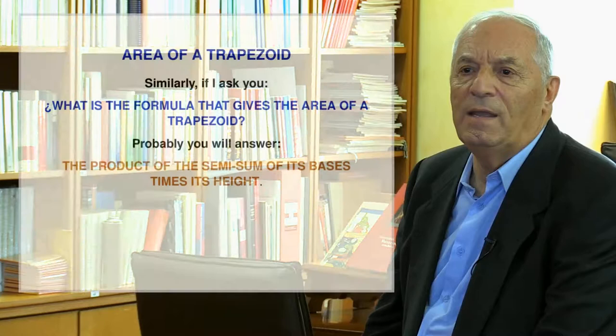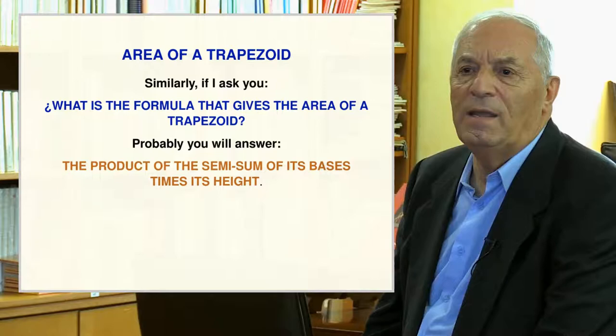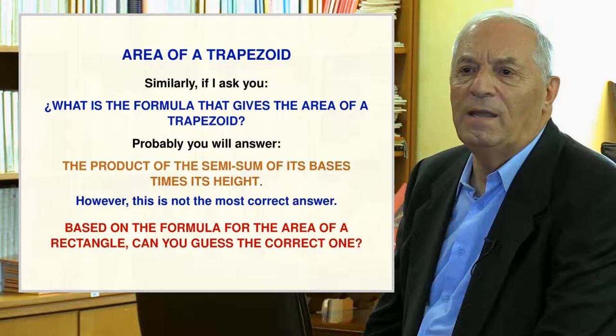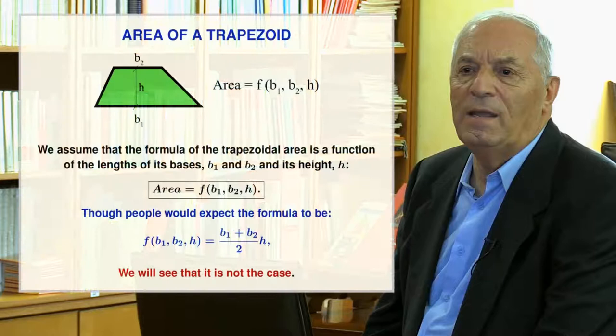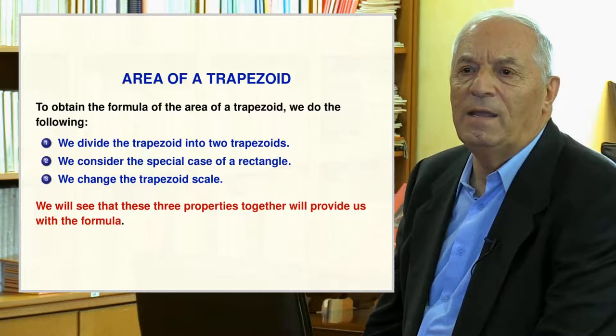Based on the formula for the area of a rectangle, can you guess the correct answer? We assume that the formula of the trapezoidal area is a function of the lengths of its bases v1 and v2, and its height h as indicated in the box formula. Though people expect the formula to be the product of the semi-sum of its bases times its height, we will see that this is not the case. To obtain the formula, we will do the following: first, divide the trapezoid into two trapezoids; second, consider the special case of a rectangle; and third, change the trapezoid scale. These three properties together will provide us with the correct formula.